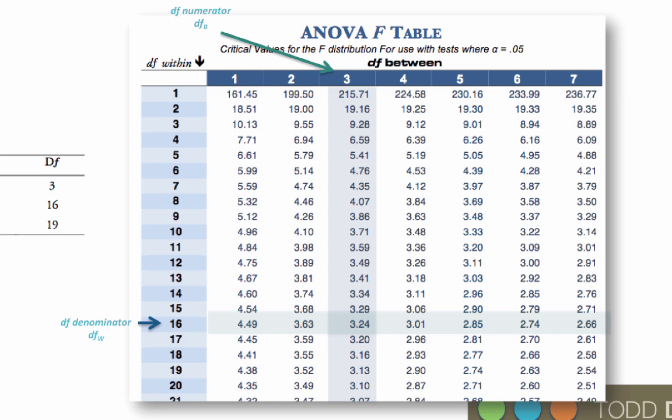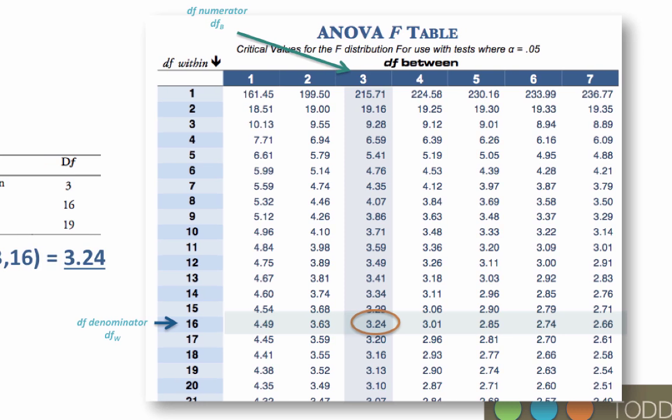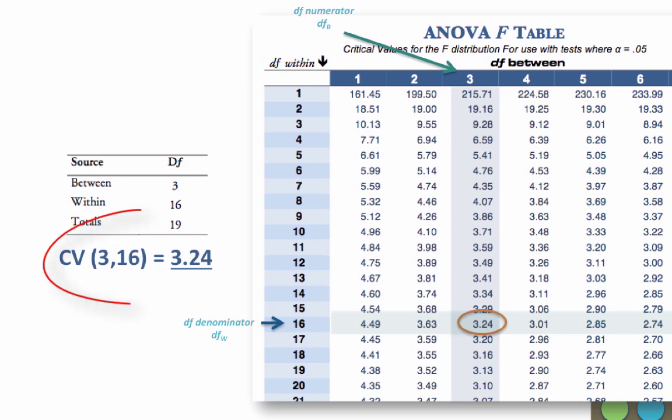So for 3 degrees of freedom between and 16 degrees of freedom within, the critical value is 3.24. And that is written CV(3,16) equals 3.24.